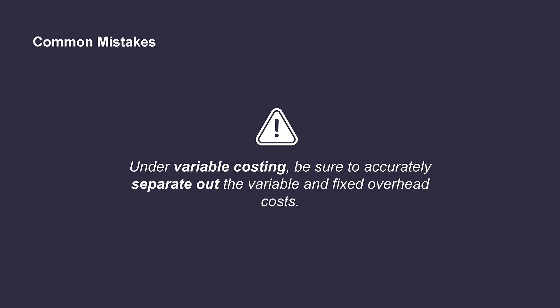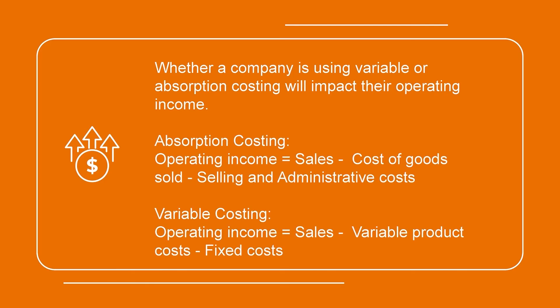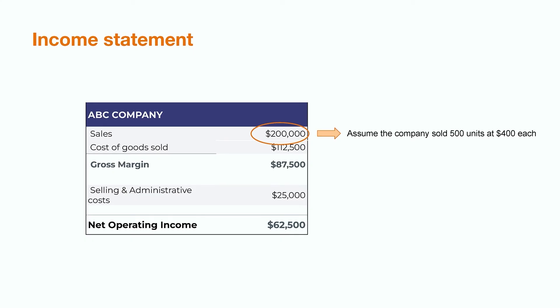It's a common mistake under variable costing to miss separating out all of the variable and fixed overhead costs. While this is not as critical for absorption costing since fixed overhead costs such as rent or insurance are included within the product costs, under variable costing all fixed overhead costs must be separated out from the product costs. Since that product cost is used to calculate an organization's cost of goods sold or variable product costs, whether a company is using variable or absorption costing will impact their operating income. Under absorption costing, operating income is calculated by taking the sales, subtracting out the cost of goods sold less the selling and administrative costs. Under variable costing, operating income is calculated by taking the sales, less the variable product costs, less the fixed costs.